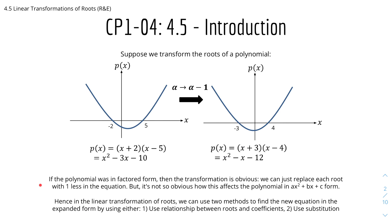If the polynomial is in factored form, the transformation is obvious — we simply replace each root with one less. However, it is not so obvious how this affects the polynomial in the expanded form ax² + bx + c. Hence, in the linear transformation of roots, we use two methods to find the new equation in expanded form.